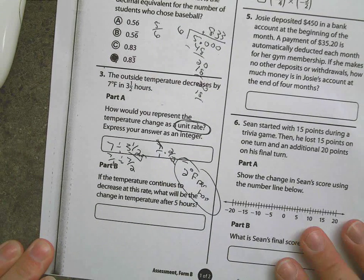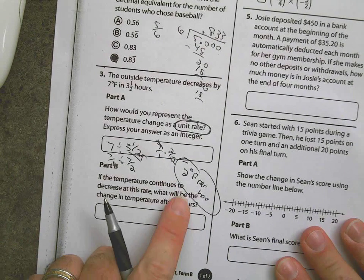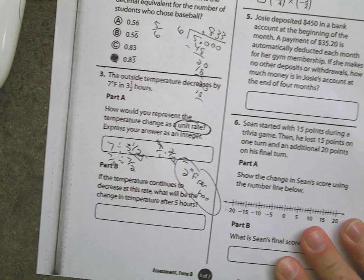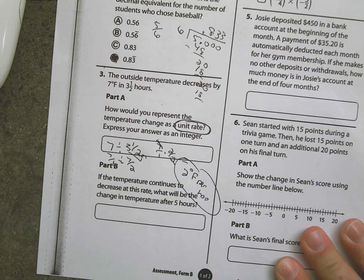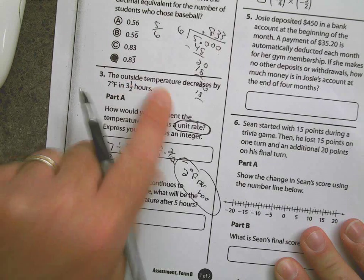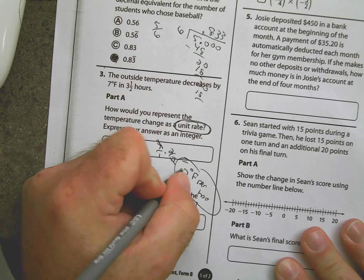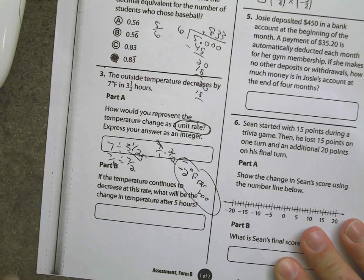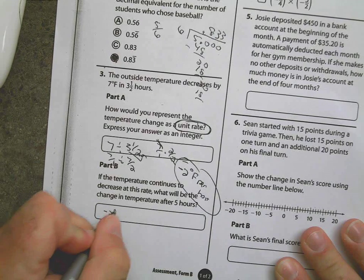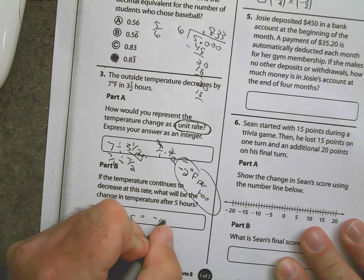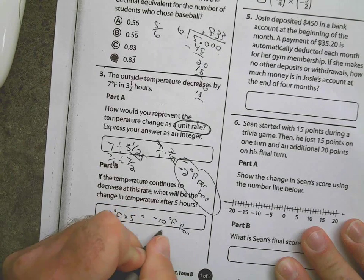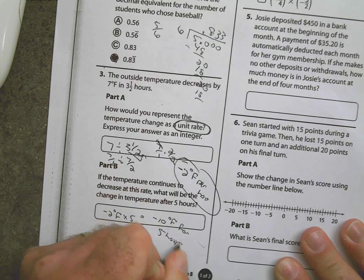Now, once you get that answer, next one's a freebie. If it says I have two degrees, well, is this an increase or decrease? Increase or decrease? It says the outside temperature decreased, so it's negative two degrees Fahrenheit per hour. Now, negative two degrees Fahrenheit times five gives me negative ten degrees Fahrenheit for five hours.